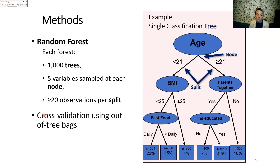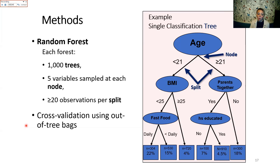We applied an internal cross-validation approach using out-of-bag samples. Each time a classification tree is created, the algorithm excludes a random subset of participants from that tree, so each tree is built on a slightly different set of individuals. This prevents overfitting to the entire dataset. This approach contrasts with having a separate held-out test dataset and a separate validation dataset.